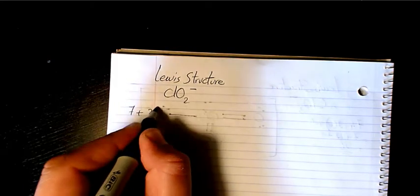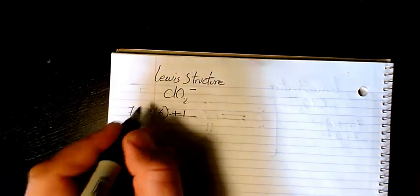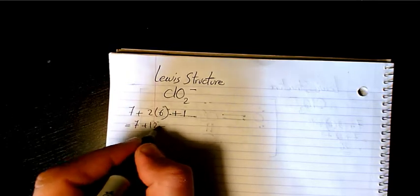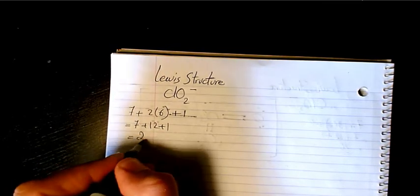So seven plus twelve plus one, that makes it 20 electrons.